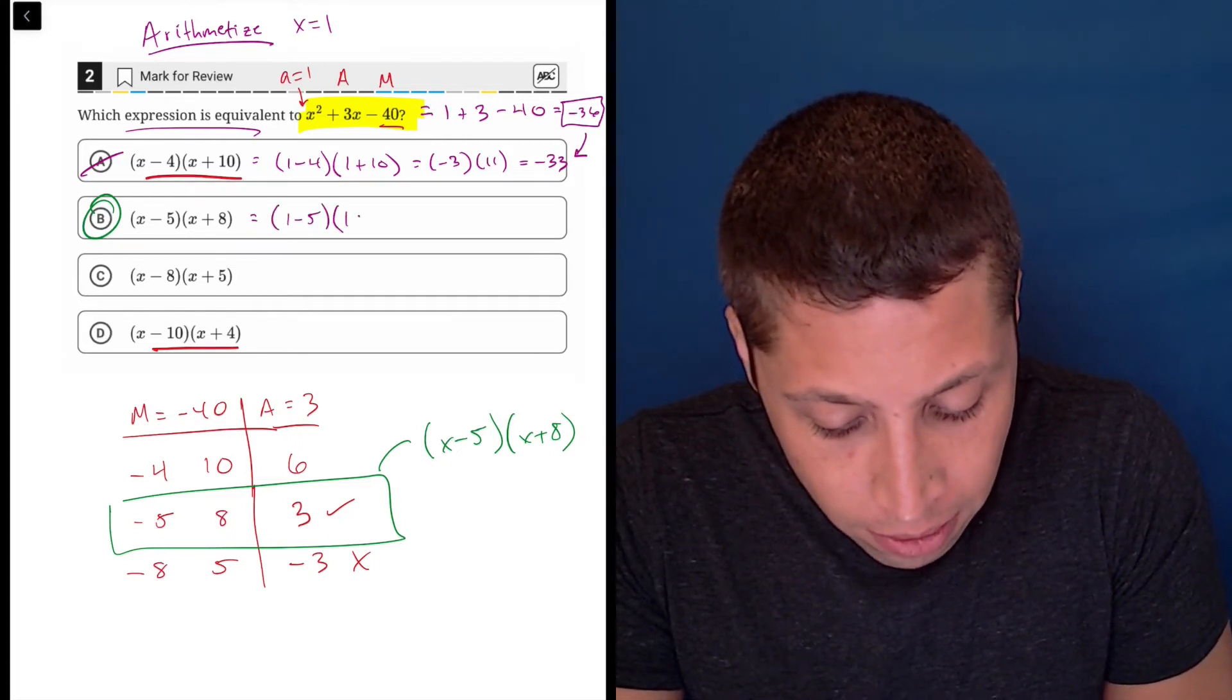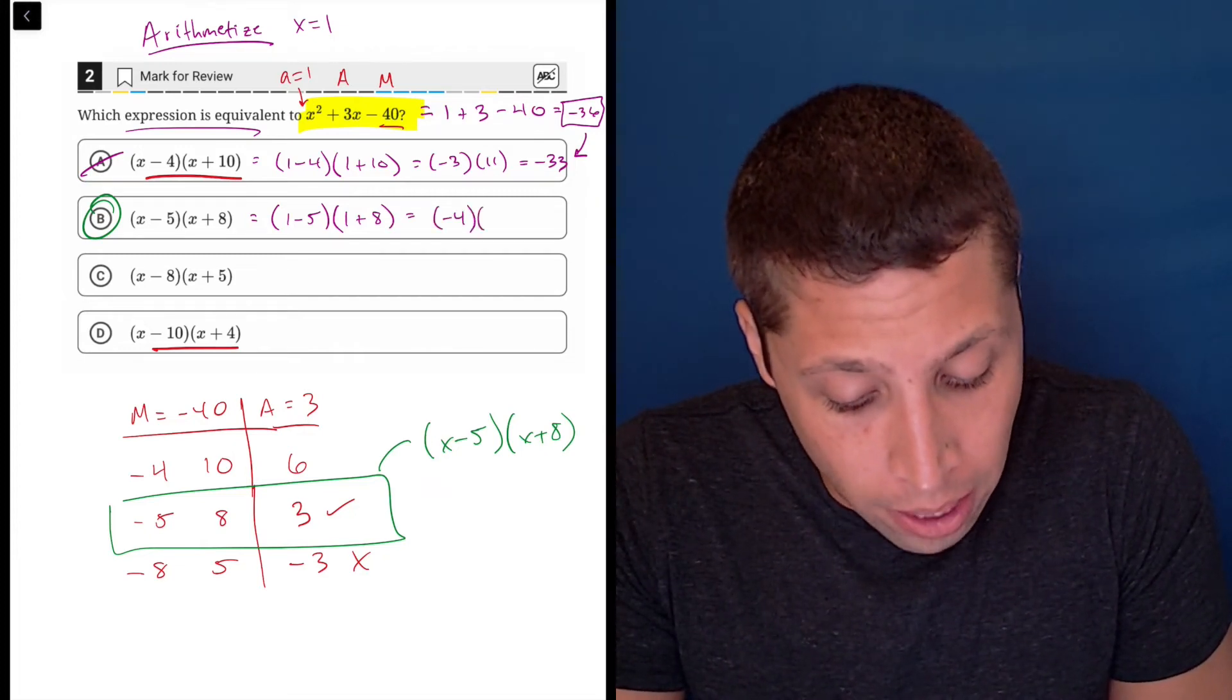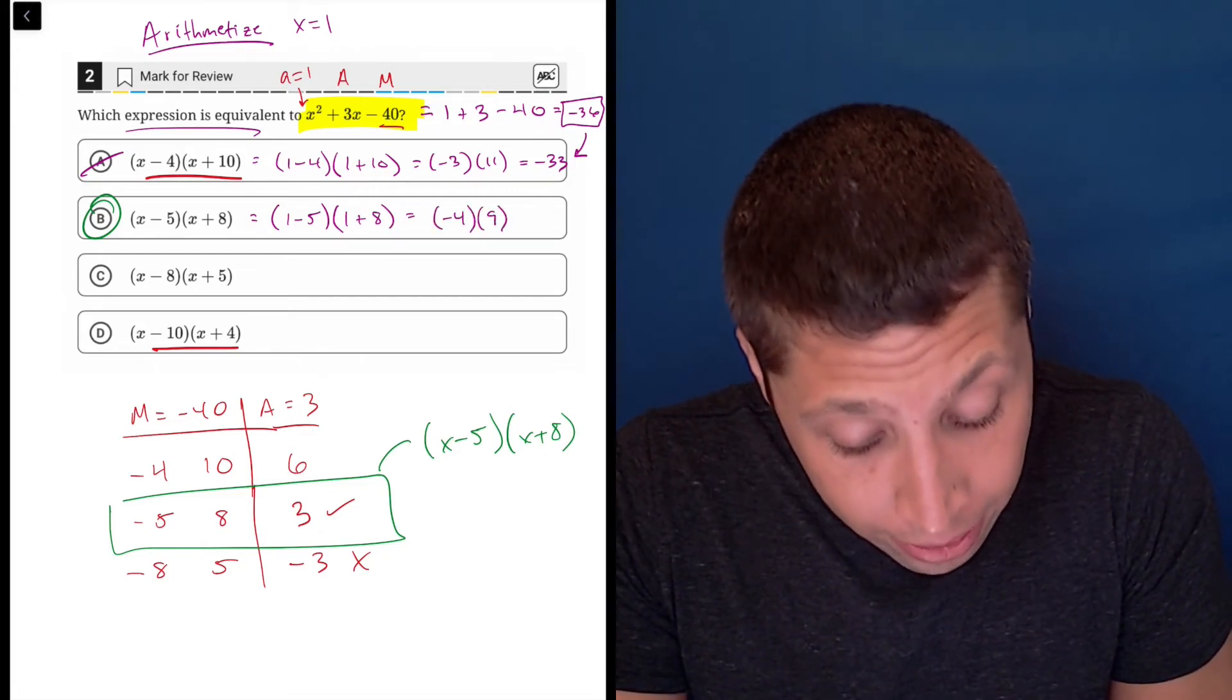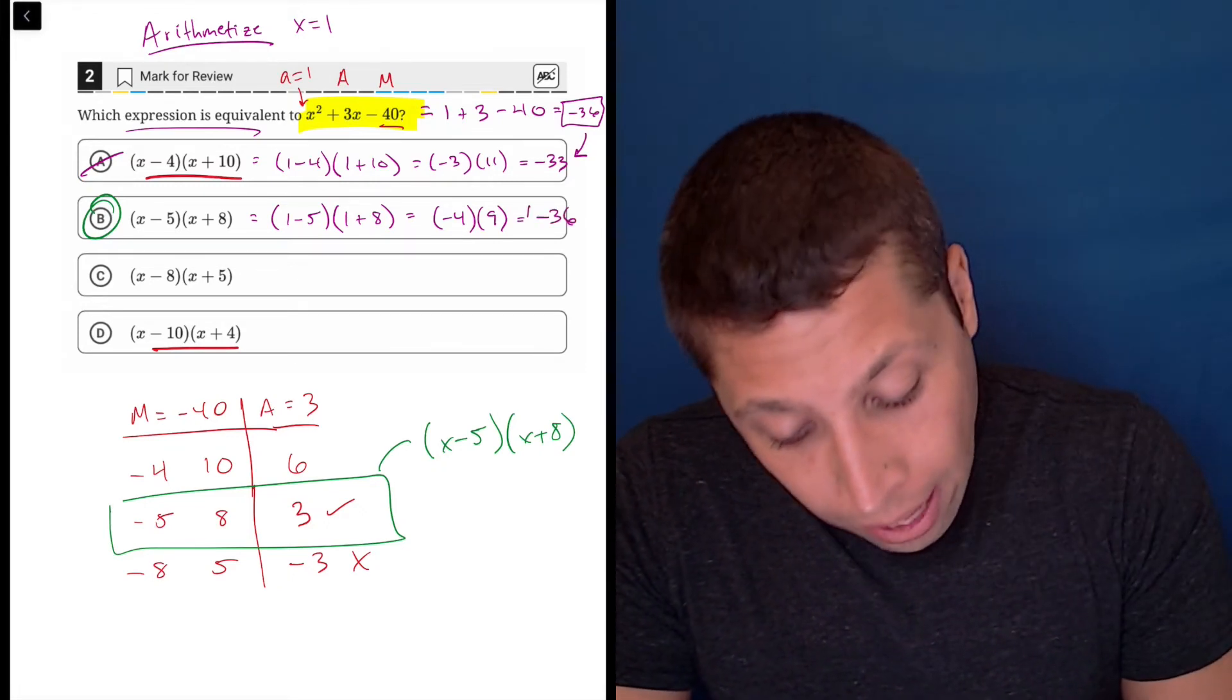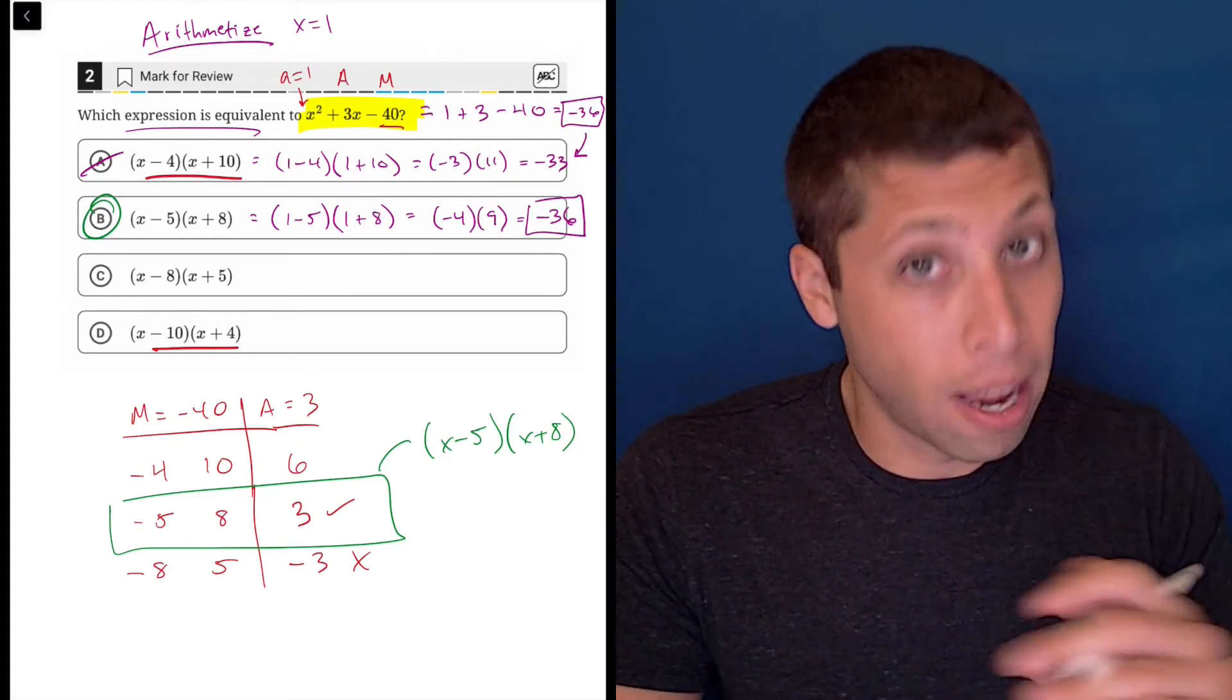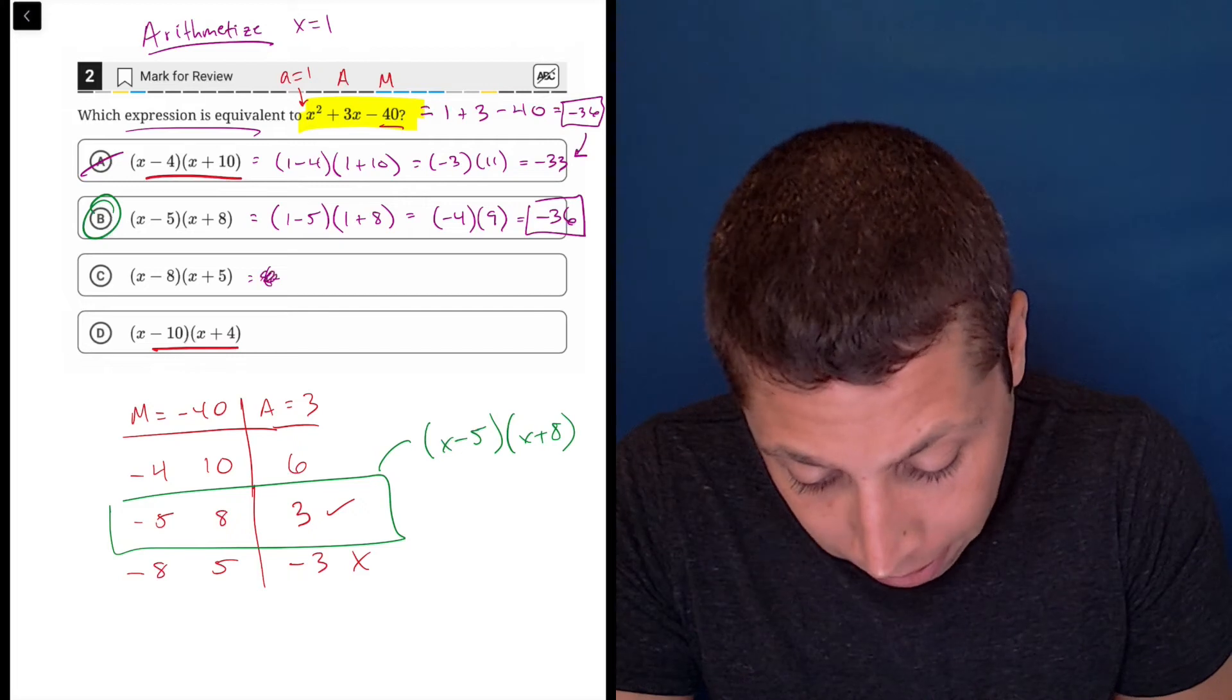We have one minus five times one plus eight. One minus five is negative four, one plus eight is nine, and negative four times nine is negative 36. So that looks pretty good. And look, we need to check every single answer choice. That's how this strategy works is sometimes things go bad. I'm going to kind of skip it here.